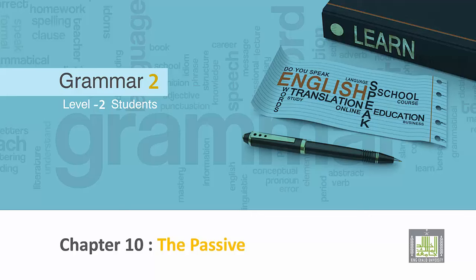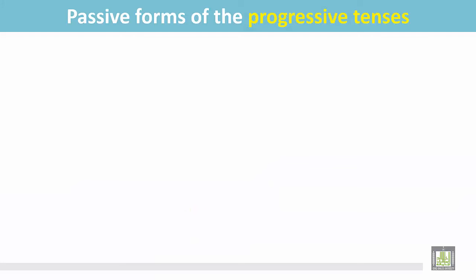Grammar 2 for level 2 students. Chapter 10: the passive. Passive forms of the progressive tenses. Past progressive interrogative sentence.